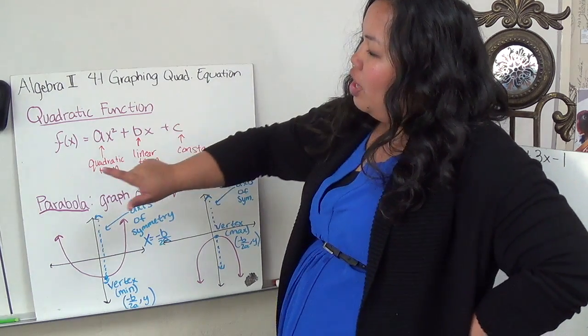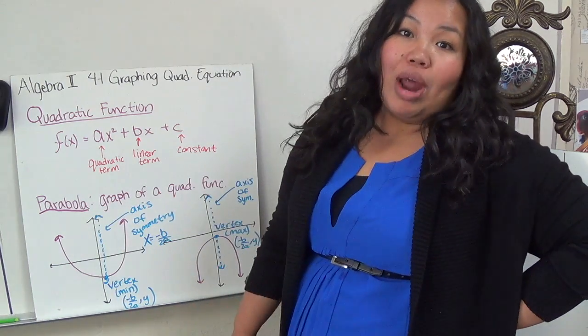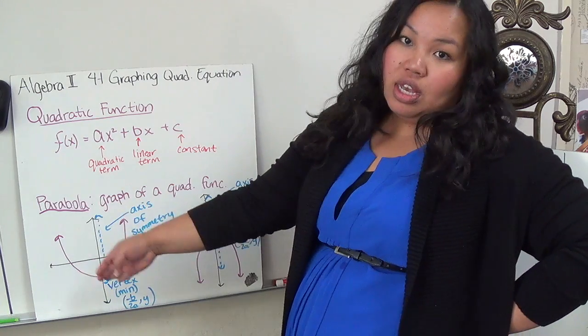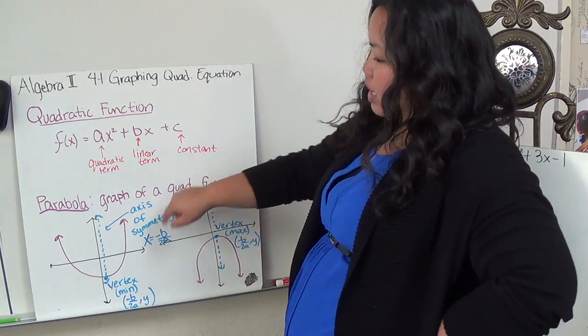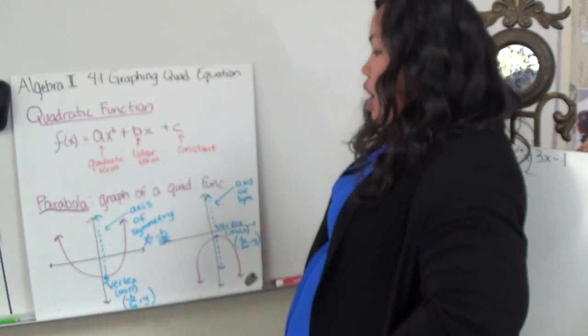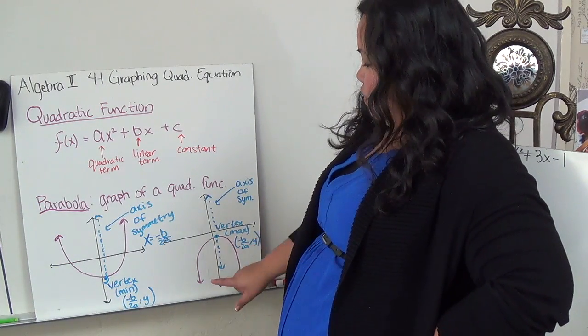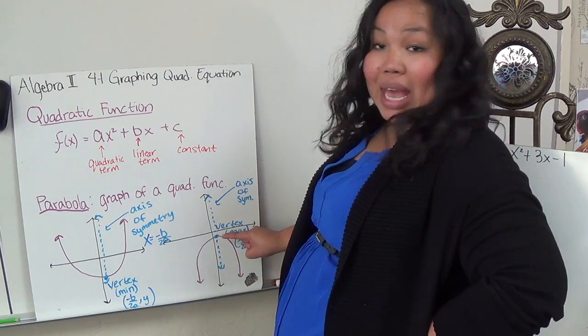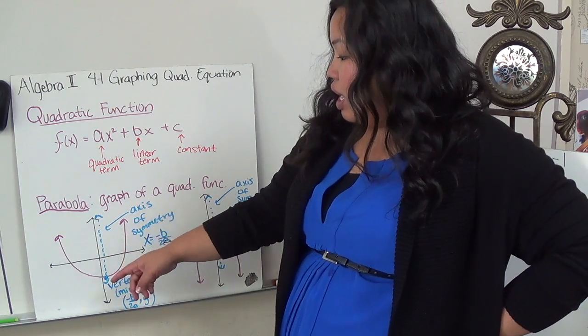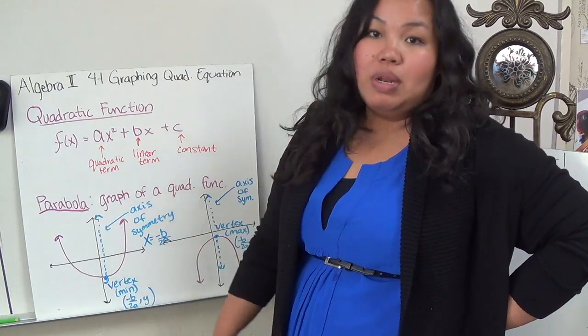The graph of a quadratic function is called a parabola. So it's this u-shaped image right here. It could be facing up, it could be facing down, but they all have the same properties. The one difference is if it's facing down, then it has something called the maximum. If it's facing up, then it has something called the minimum.